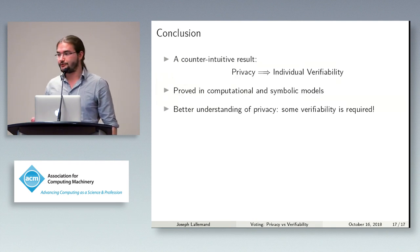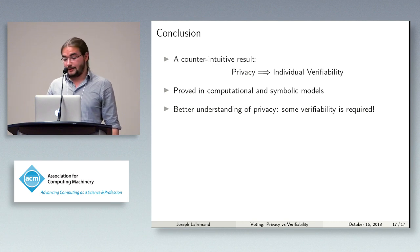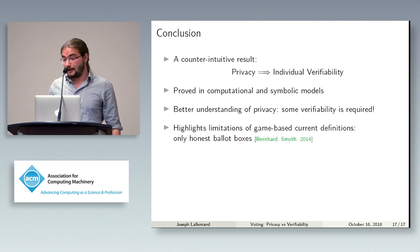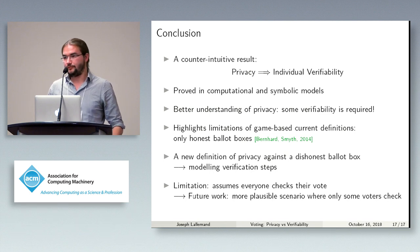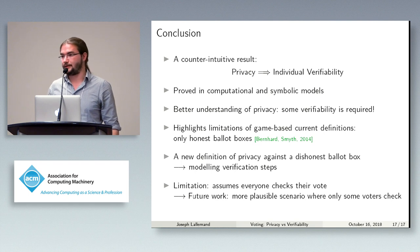To summarize: we show the counter-intuitive result that, contrary to what we might think, privacy implies individual verifiability. We prove it in completely different models — computational and symbolic — to show it is a general property not dependent on the model. This gives us a better understanding of how privacy works, because it shows that to achieve it you need at least individual verifiability. It also highlights limitations of current game-based definitions, which mostly consider honest ballot boxes. We propose a new definition of privacy against a dishonest ballot box. As future work, we plan to write a more general definition that handles more realistic scenarios where only some people check their votes.